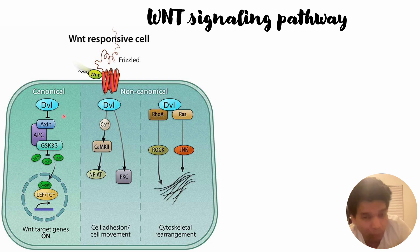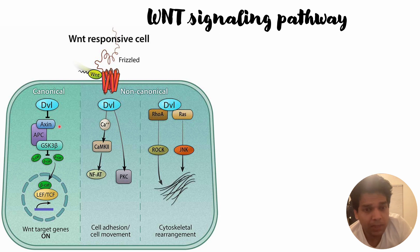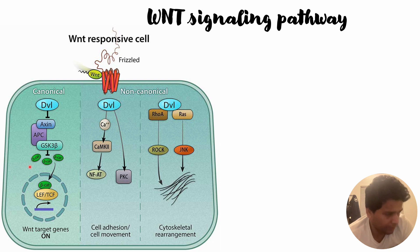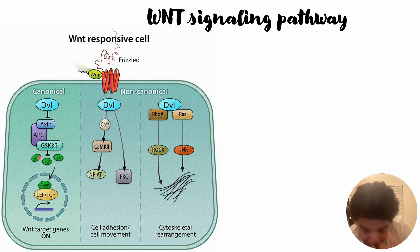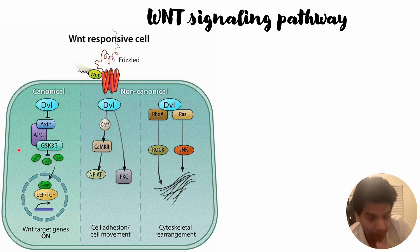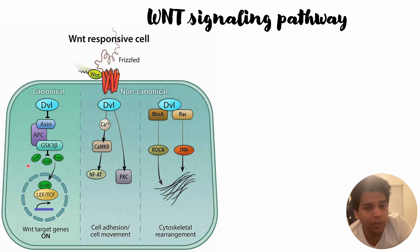phosphorylation will trigger downstream signaling pathways that will lead to the upregulation of beta-catenin. This beta-catenin will interact with E-cadherin that is present within the cells, and that helps in cell adhesion properties.